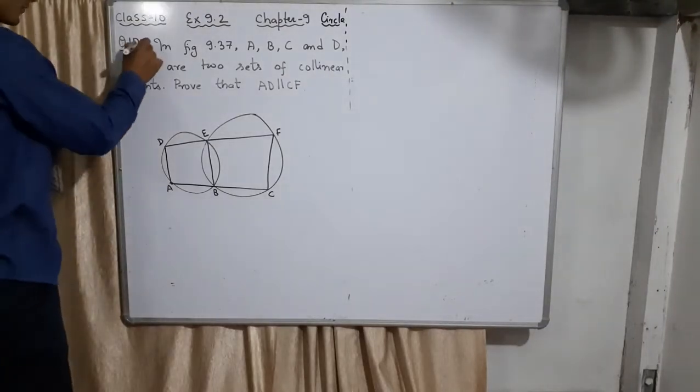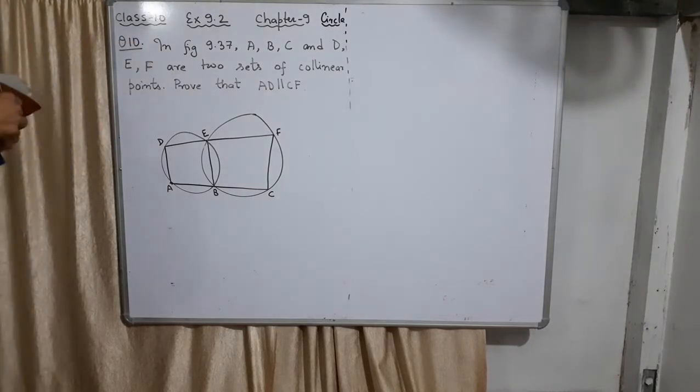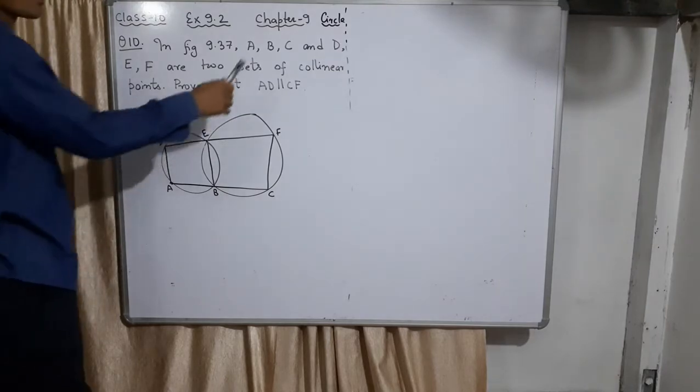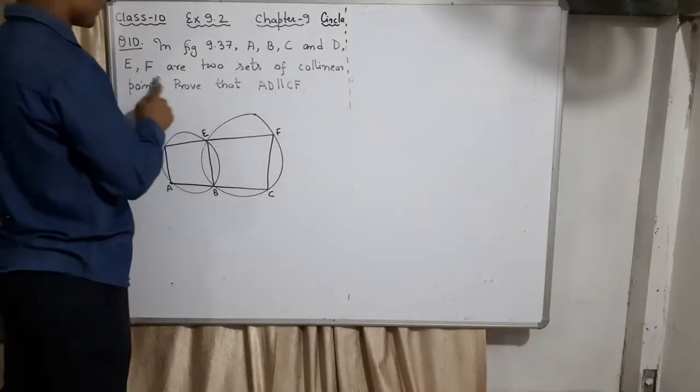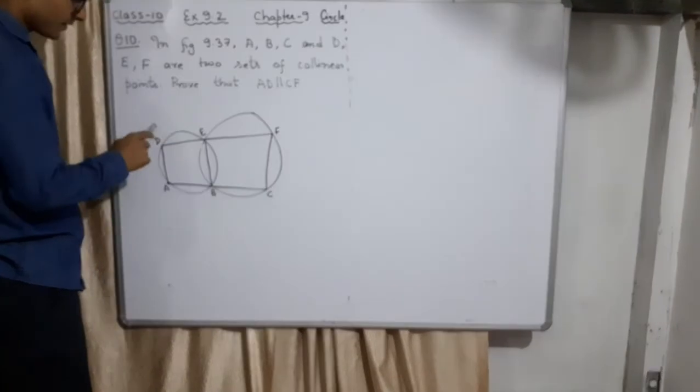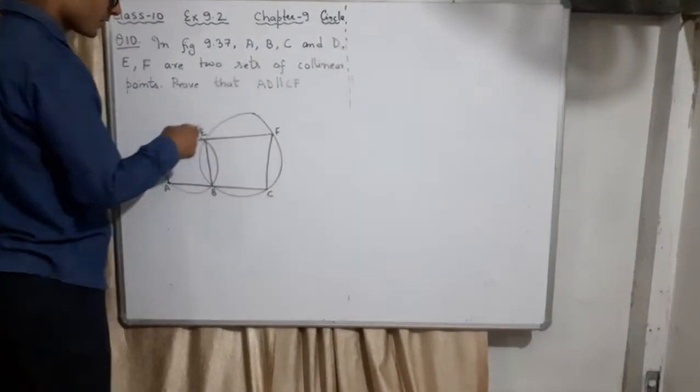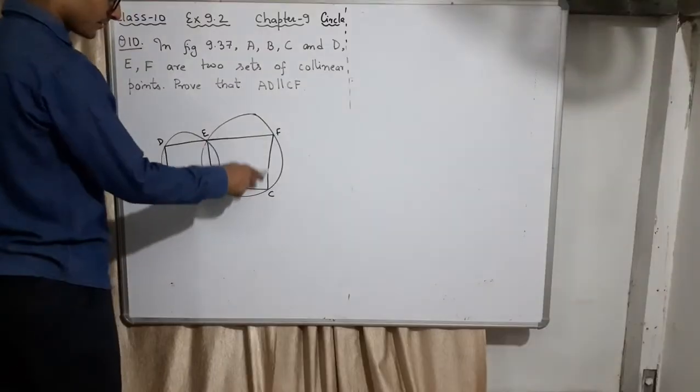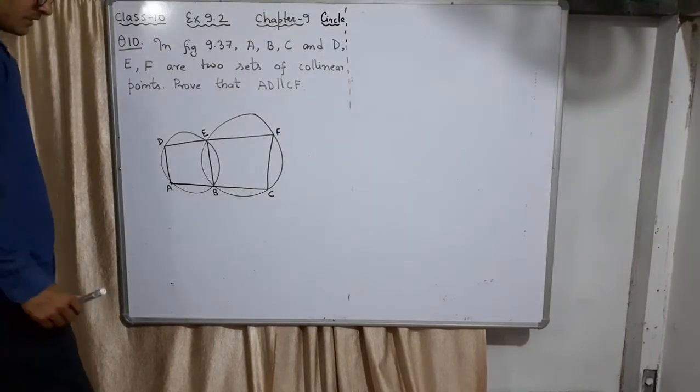Welcome back to the last question of Exercise 9.2. This is Class 10, Chapter 9, Circles, Question Number 10. In this figure, ABCD and ADF are two sets of collinear points. ABC is a straight line, BEF is a straight line, and both are inside and attached with two circles. This is the diagram. Now you have to prove that these lines are parallel. Let's see.